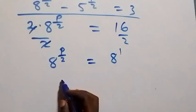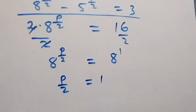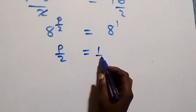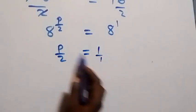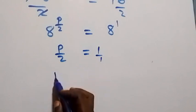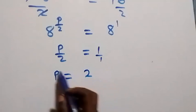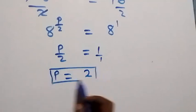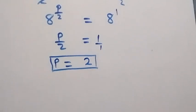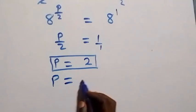Since the bases are equal we equate the exponents: p over 2 equals 1. Cross-multiplying gives p times 1 equals 1 times 2, so p equals 2.